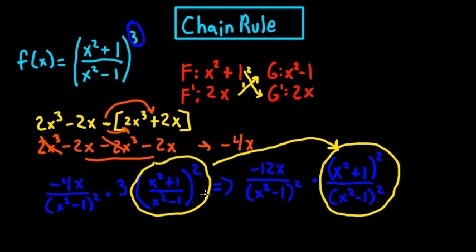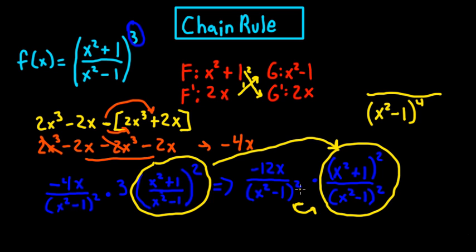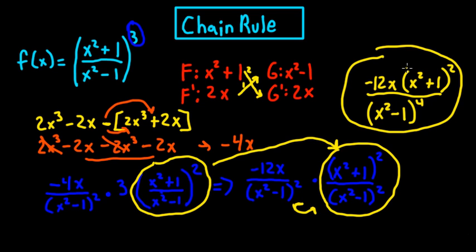The reason why we did that is because we want to simplify this. You're going to simplify the bottom part, so the bottom part is going to read x squared minus 1 to the 4th power. The reason why is because these exponents when multiplied you just add them: 2 plus 2 equals 4. So you can convert this so it reads negative 12x times x squared plus 1 squared, and that is your final answer.